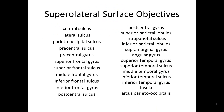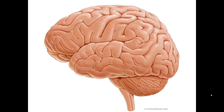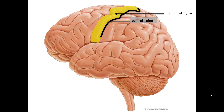We will start with the superlateral surface. Here are the objectives that we will go through. Looking at the frontal lobe, remember that the precentral gyrus is the first gyrus anterior to the central sulcus, and it is important for motor control. It is divided from the rest of the frontal lobe by the precentral sulcus.